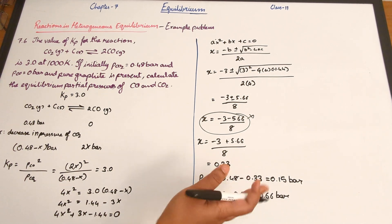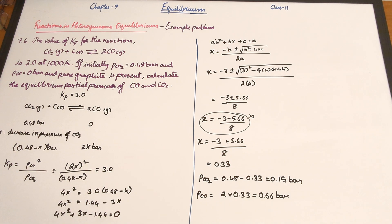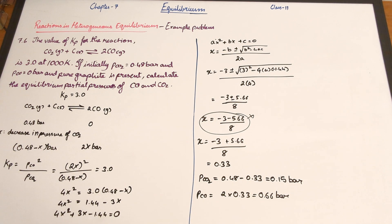I'd like to point out that in the textbook, at least in the version I have, both answers have been labeled as partial pressure of carbon dioxide. The first one is actually the partial pressure of carbon monoxide. These are all at equilibrium. Essentially we did the same thing as in question 7.4 — the only difference is that in that case we used concentration, and here we used partial pressure.